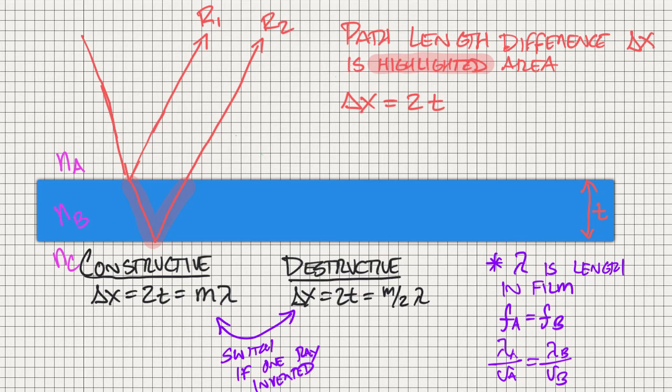Ray one is just going to travel this length here. Ray two in total is going to travel this thickness plus another thickness and then equal distance as ray one. So there's a path length difference between ray one and ray two, which is this highlighted region here.